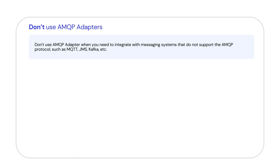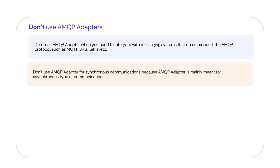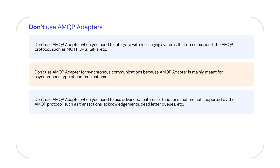Employ message headers for targeted routing and message filtering. Do not use AMQP adapters to integrate systems that do not support AMQP protocol — for example, MQTT, JMS, or Kafka. Do not use the AMQP adapter for synchronous communications, because the AMQP adapter is mainly meant for asynchronous type of communications.